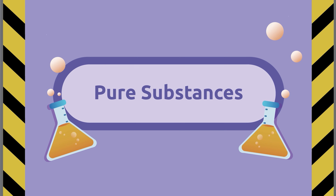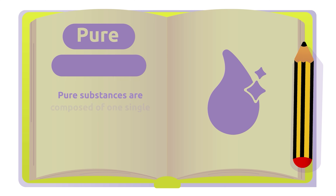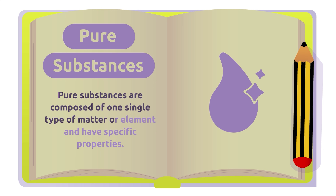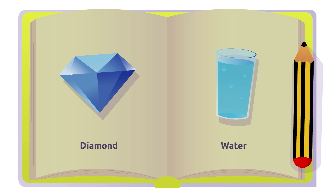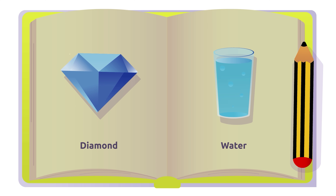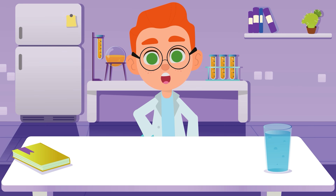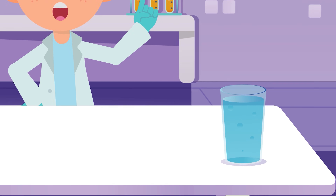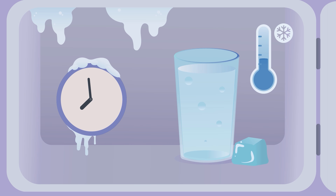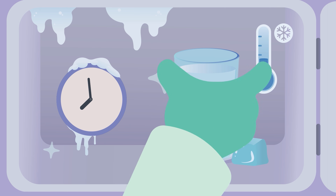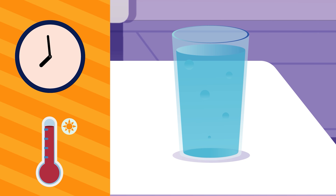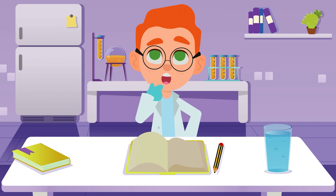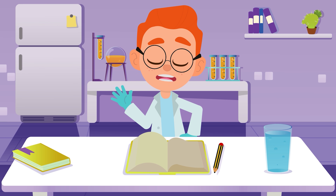Pure substances are composed of one single type of matter or element that have specific properties. For example, water and diamonds are pure substances. In a physical change, the composition of these substances wouldn't be altered. Look at this glass of water — if I place it in the freezer, the water will turn into ice because of the very low temperature. But if I took the glass out of the freezer, the ice would melt, turning into water again. This is a physical change, but the substance is still the same.